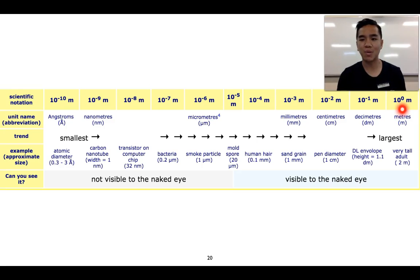Which is 10 to the power of 0, or 1 meter. So we might be looking at measuring the size of people and adults using meters. As we move to the left, the units get smaller and smaller and become harder for us to view with the naked eye.